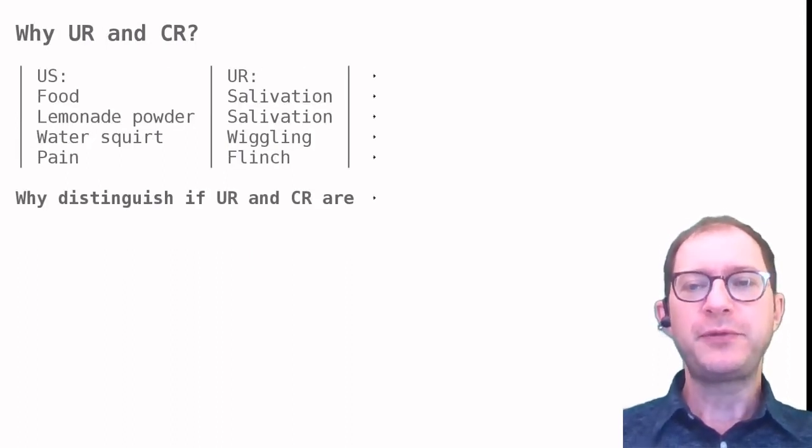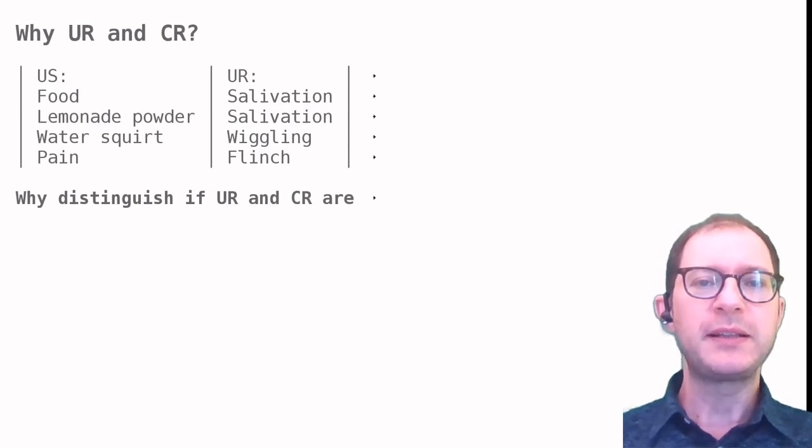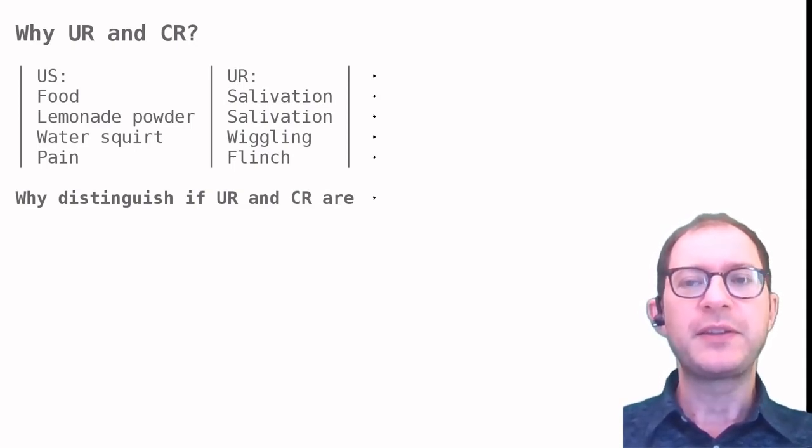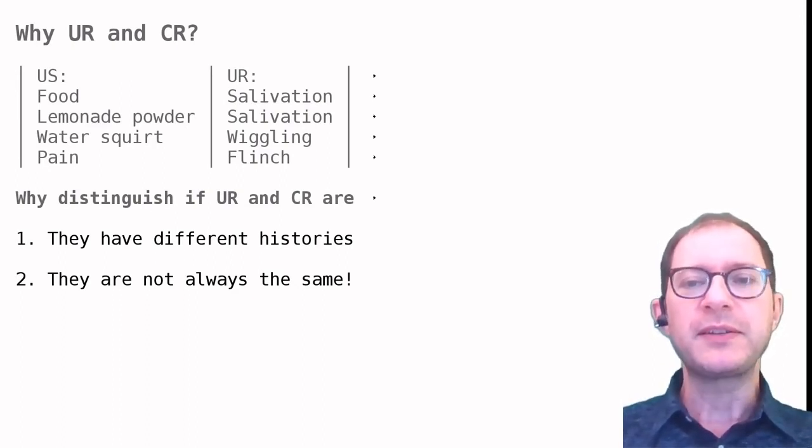In the examples that we've seen so far, the conditioned and unconditioned response always look the same. The dog and the student salivated, the baby wiggled, and the roommate flinched to both the US and the CS. Why do we insist on calling one response the UR and the other the CR? There are at least two reasons. One is to keep in mind that the CR is learned during the experiment, while the UR was there already. So even if they look the same, the UR and the CR have different histories, so to speak.